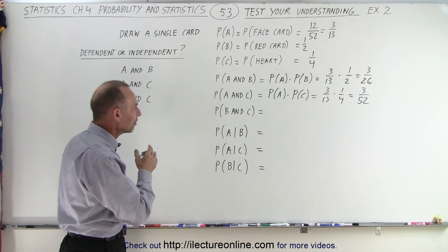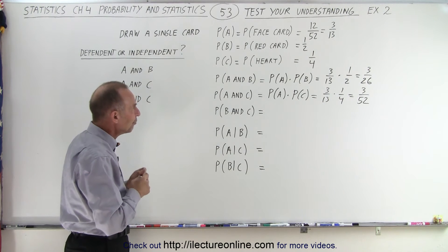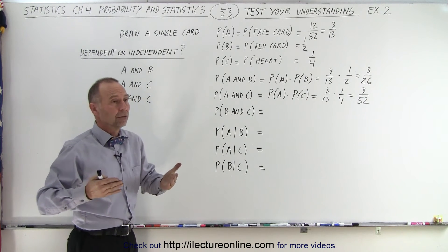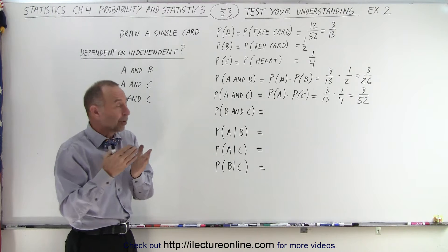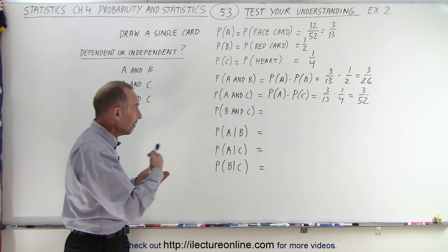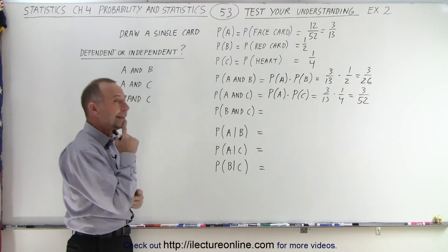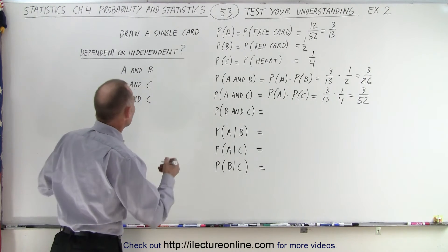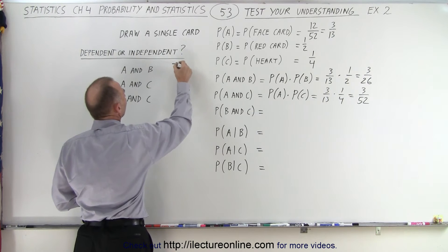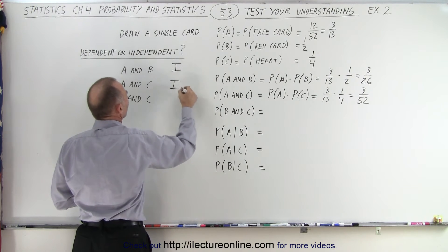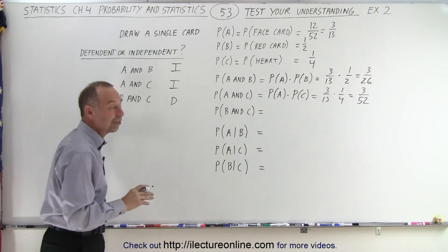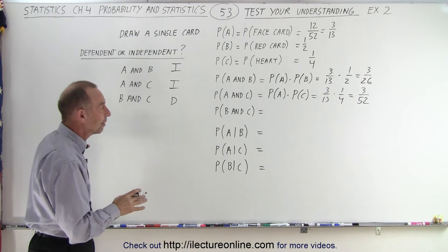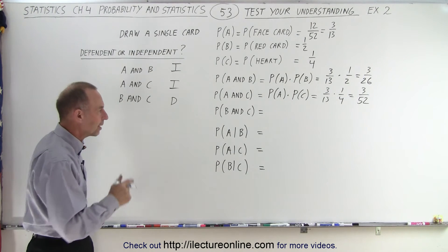How about the probability of B and C? If we pull out a heart, then we know that it's a red card. So finding out that event C has occurred means we affect the outcome of B — they look like they're dependent on one another. So I would say A and B are independent, A and C are independent, and B and C are dependent. That's my early guess, so I'm not going to compute P(B and C) as a simple product yet.